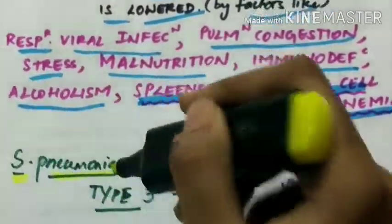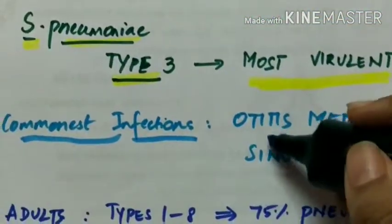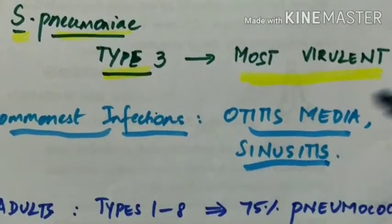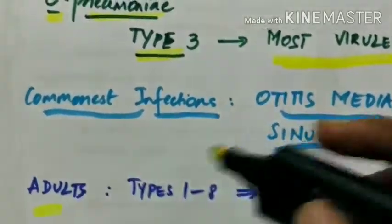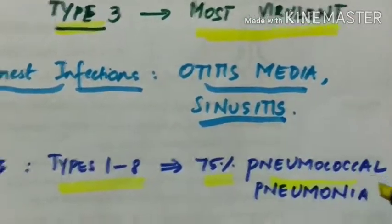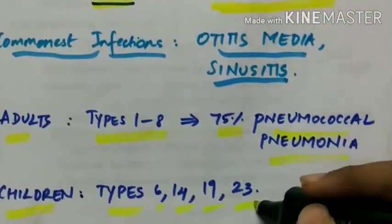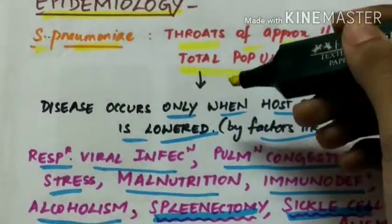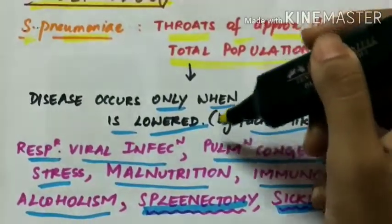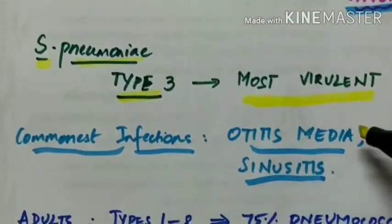The Streptococcus pneumoniae type 3 is the most virulent strain. The commonest infections caused by strep pneumoniae are otitis media and sinusitis. In adults, types 1 to 8 are more common, they cause 75% of the pneumococcal pneumoniae. And in children, type 6, 14, 19 and 23 are common. So Streptococcus pneumoniae manifests as active disease only when the host resistance is lowered. Type 3 is the most virulent. Commonest infections include otitis media and sinusitis.